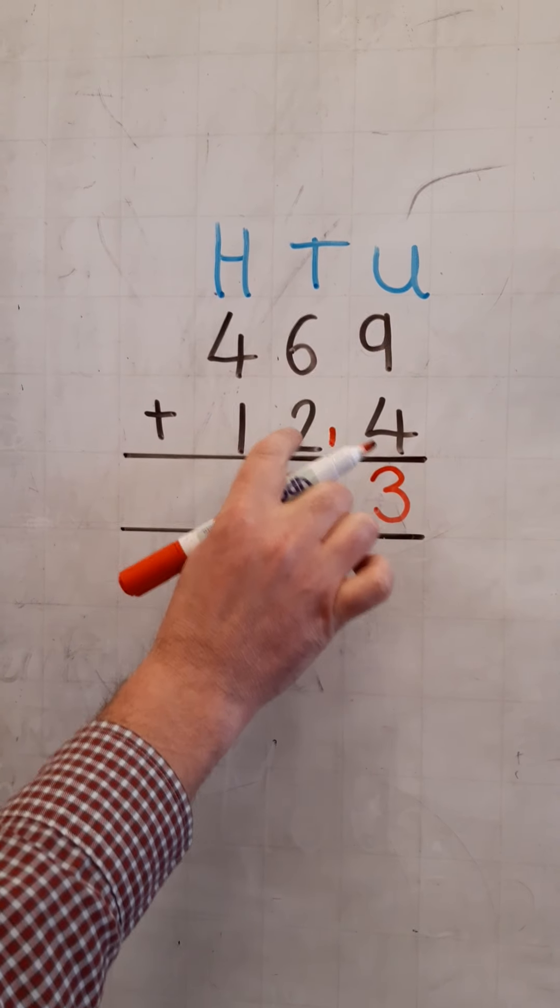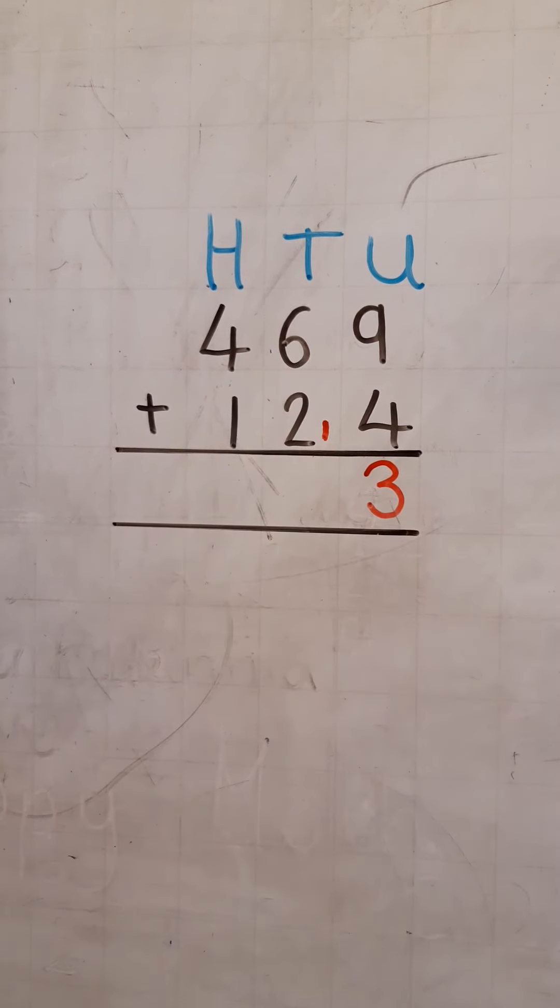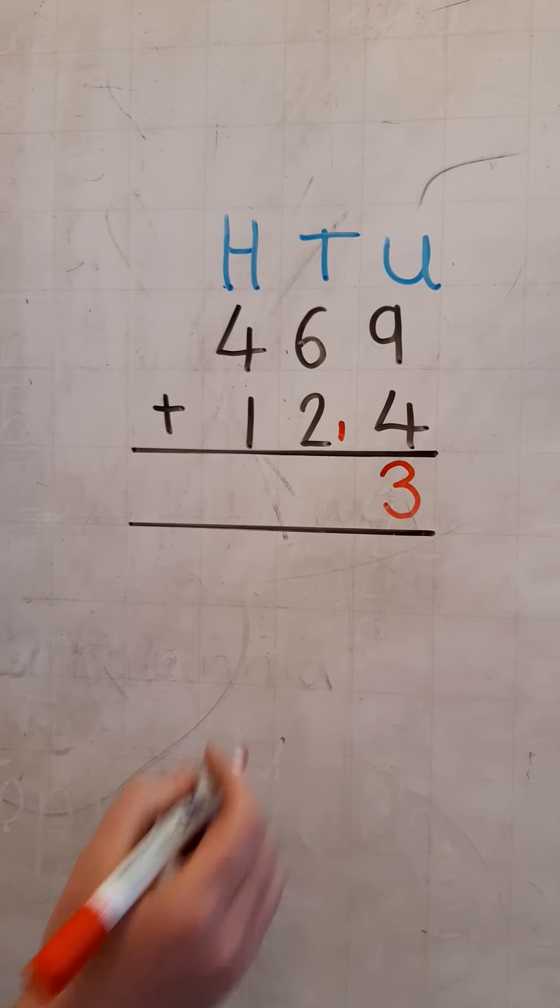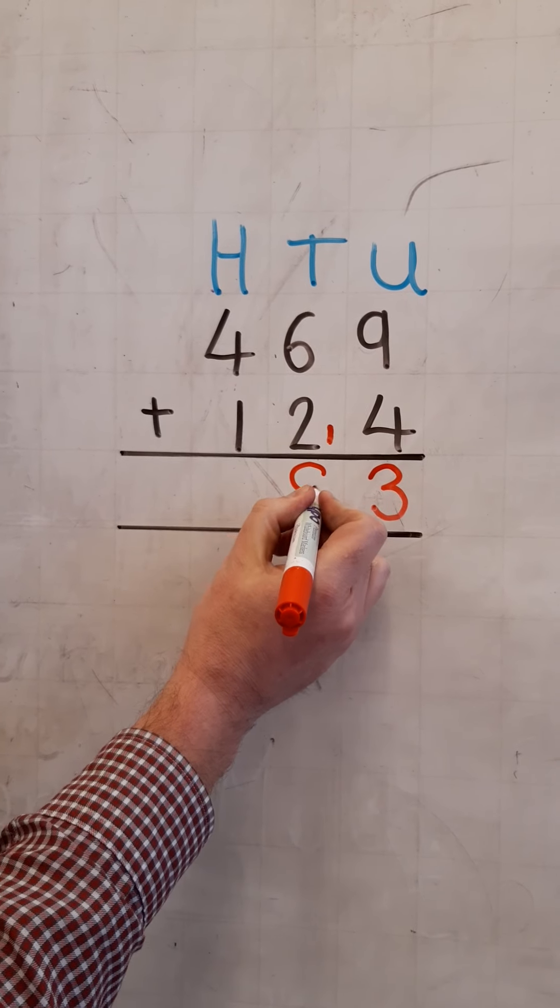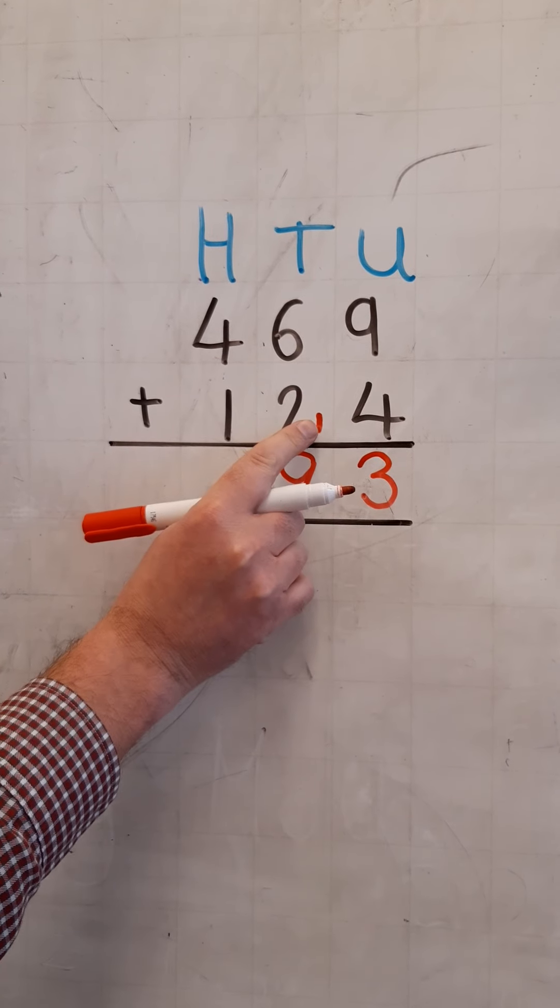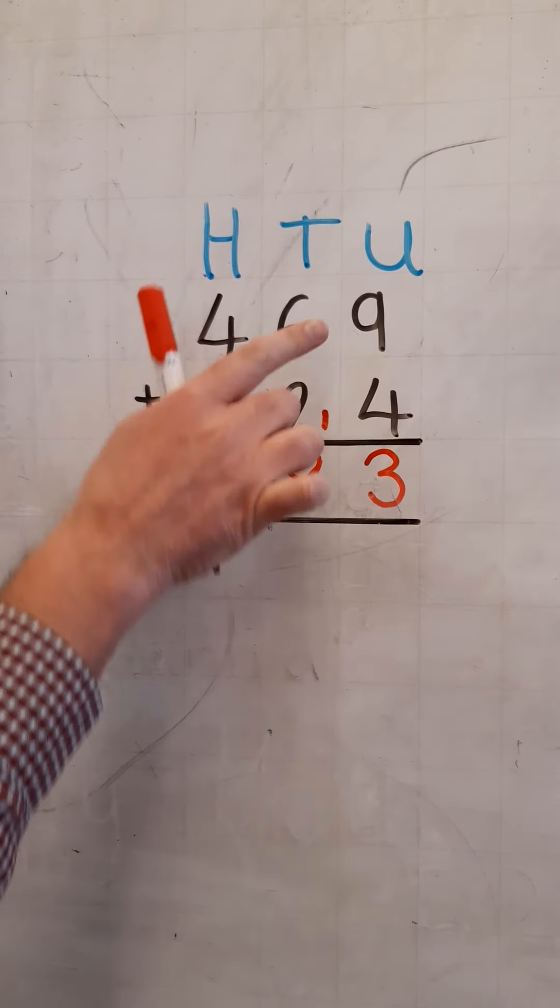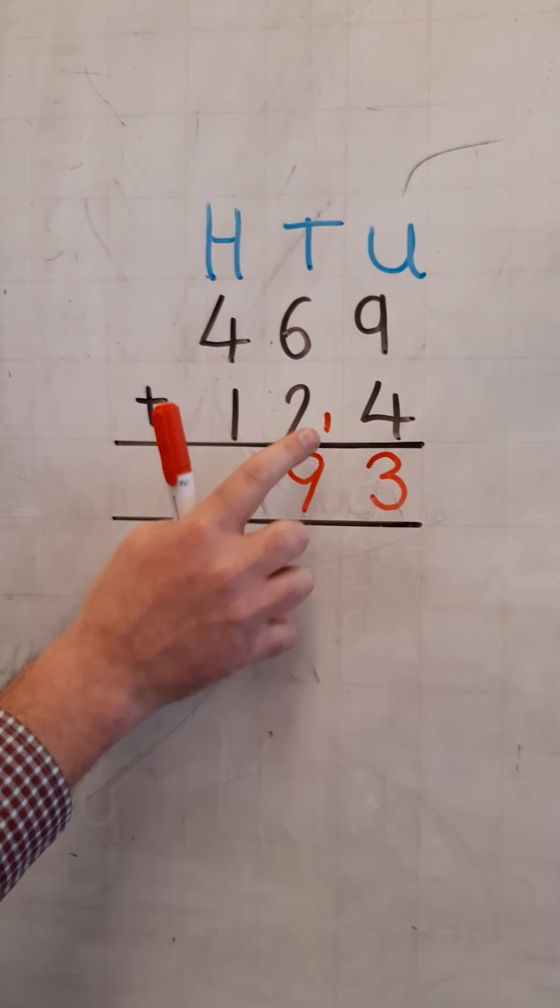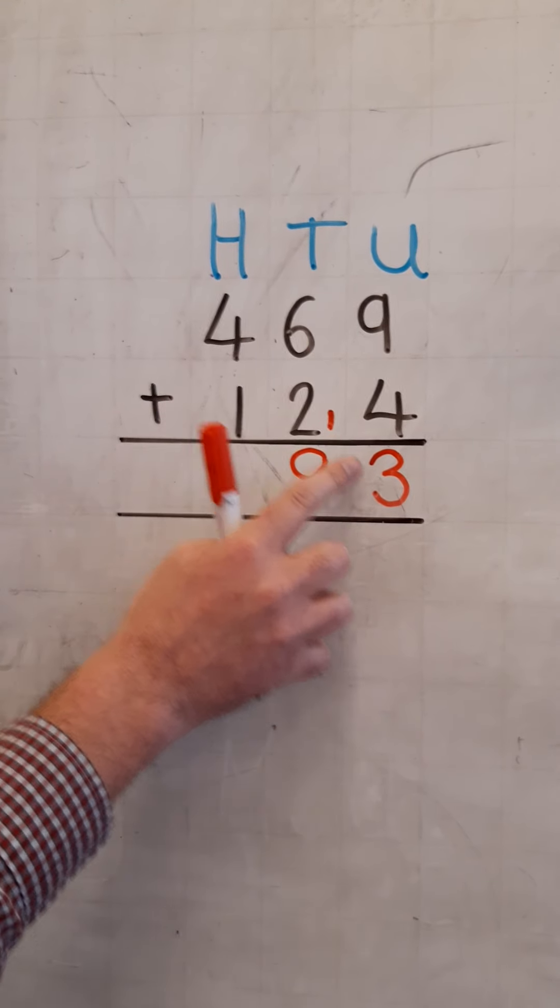So we add six tens, add two tens, add one ten, gives us a total of ninety-three. But it's very important, you can still see that thirteen there. You can see one ten, three units. Nine units add four units, it's thirteen. It's still there, you can still see it.